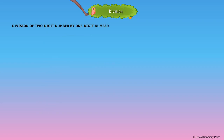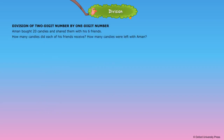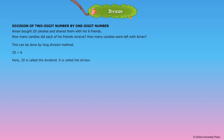Division of a two-digit number by a one-digit number. Amun bought 20 candies and shared them with his six friends. How many candies did each of his friends receive, and how many candies were left with Amun? This can be done by the long division method. In 20 divided by 6, 20 is called the dividend and 6 is called the divisor.